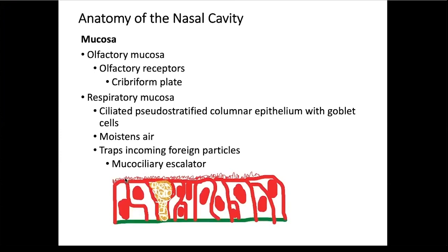Smoking will actually damage the cilia, and a smoker will develop a smoker's cough. Because the cilia are absent, the smoker is not able to move the mucus up toward the throat to swallow it. Instead, the mucus moves down toward the lungs by gravity, and the only way to get that mucus out and prevent it from going into the alveoli is to cough.